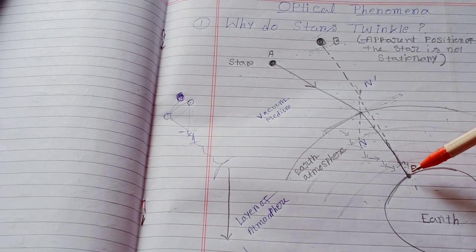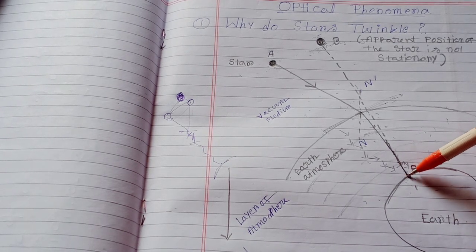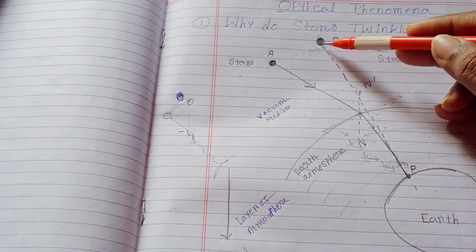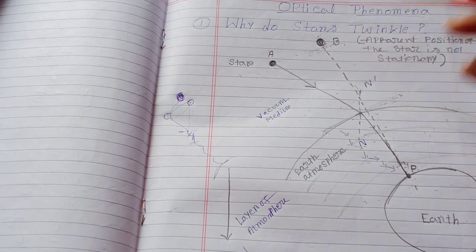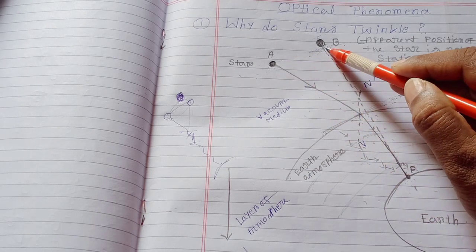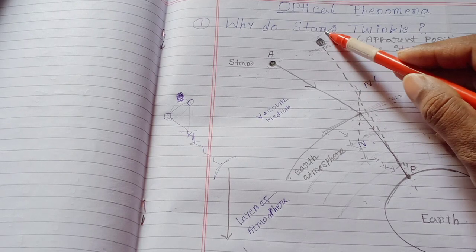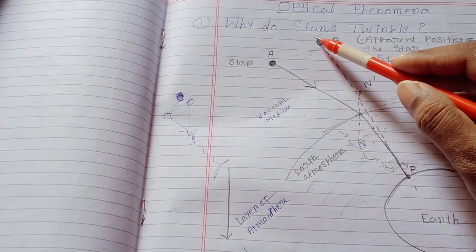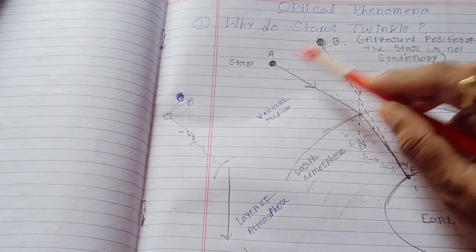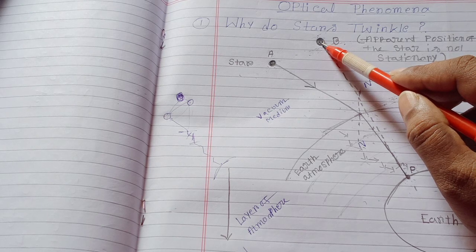As we know, the human eye always sees the object in a straight line. So if we draw a line from this point P up to that point, then we'll reach here. This position will be the apparent position of the star A. Actually, the observer P will see the star at this position, which is slightly higher than the actual position. This is called the apparent position of the star.